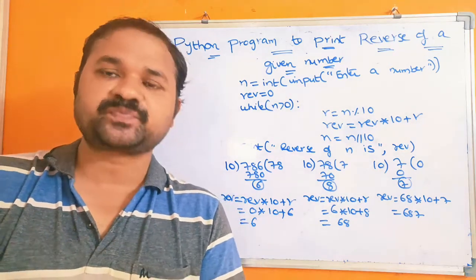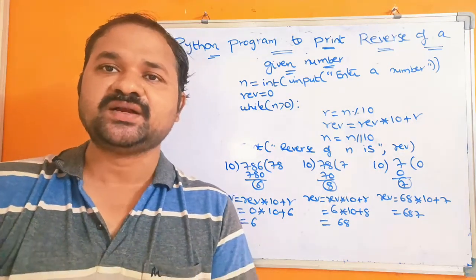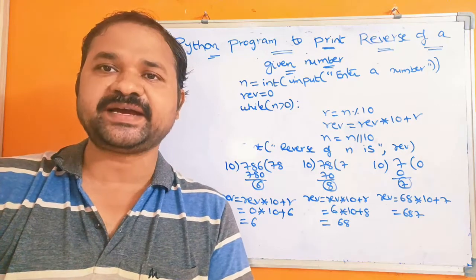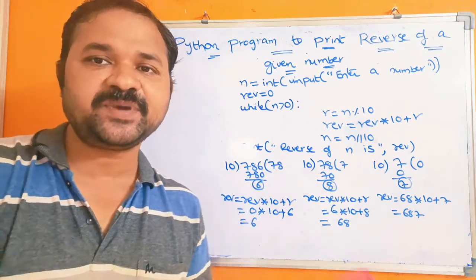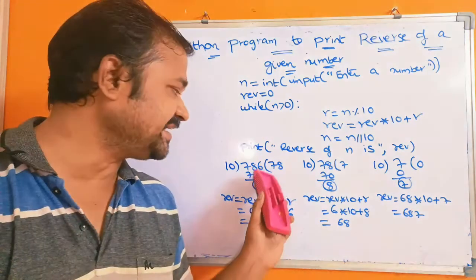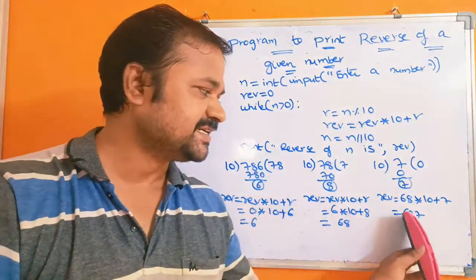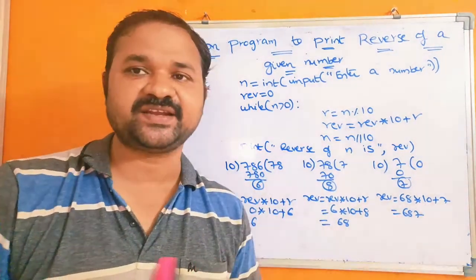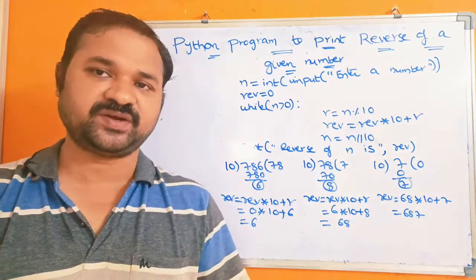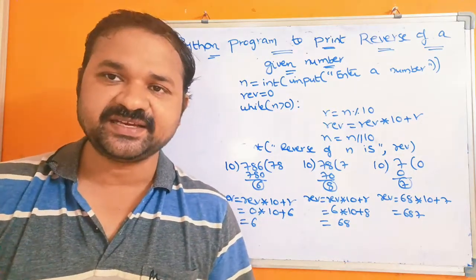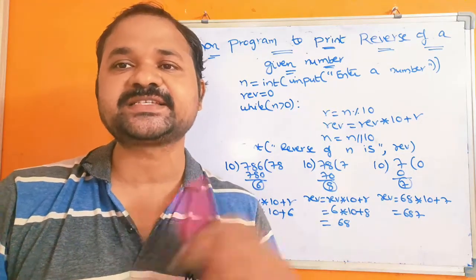In this video we are going to discuss a Python program to print the reverse of a given number. For example, if the number is 786, the reverse is 687, and that is what we have to display as output. Similarly, the reverse of 123 is 321.